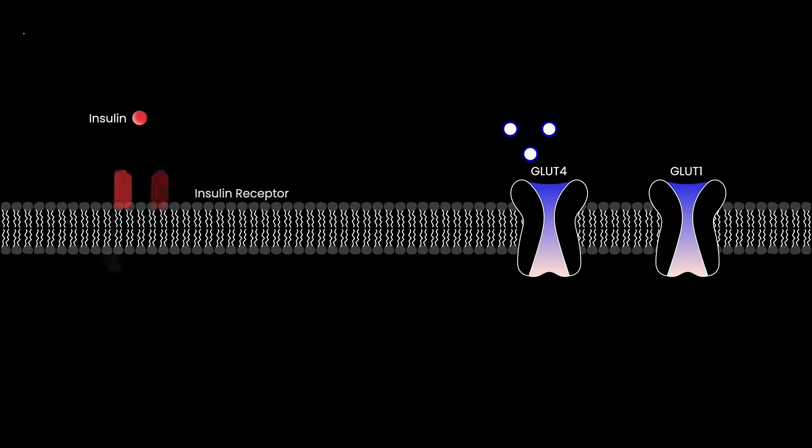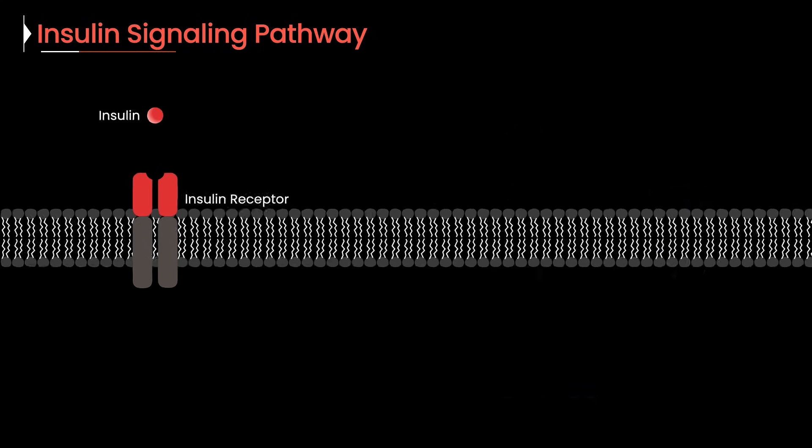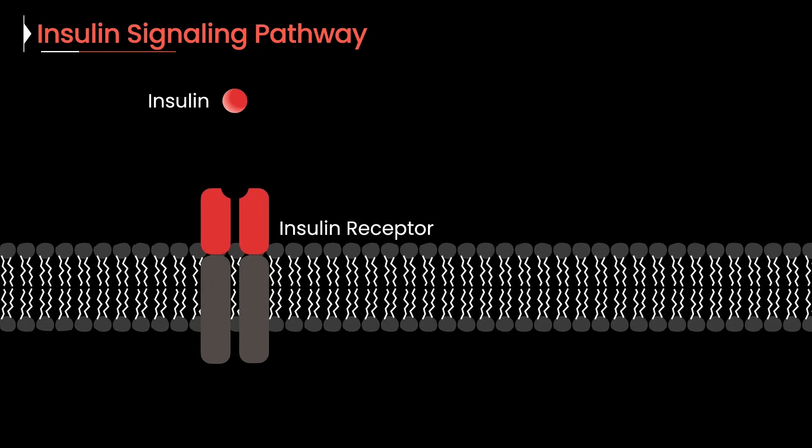Let's take a look at how your cells play this game of tag when your blood sugar runs high. The cell needs to do two things: take in glucose and store it. So how does it signal itself to do that? When blood sugar runs high, insulin is released.